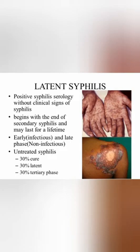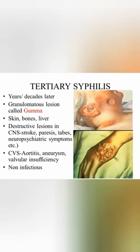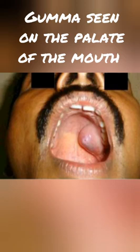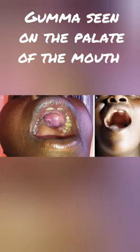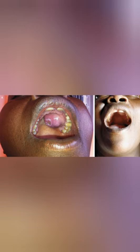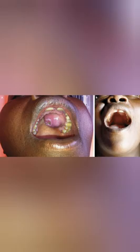Tertiary syphilis is the destructive stage, with lesions developing in the skin and bone, and widespread organ involvement. The main types include late benign syphilis — characterized by inflammatory granulomatous lesions called syphilitic gummas, which are rubbery, tumor-like masses forming in various organs and bones. On post-mortem examination, these gumma lesions can be found in the affected organs.